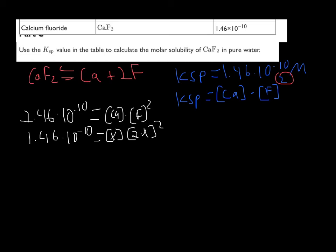squared. So, simplify that out a little bit. We get 1.46 times 10 to the minus 10 equals 4X cubed. So, now, we solve for X. 1.46 times 10 to the minus 10 divided by 4 over the cube root.